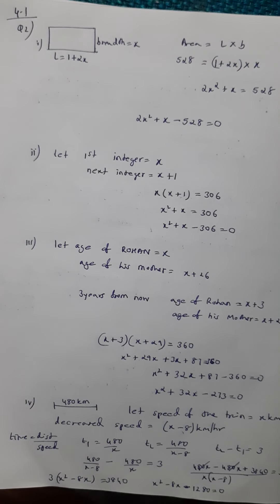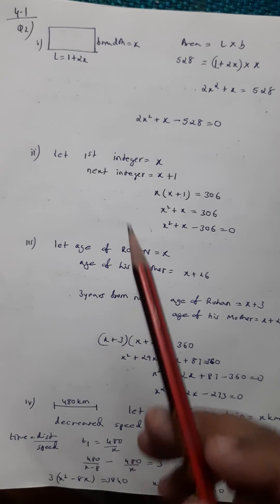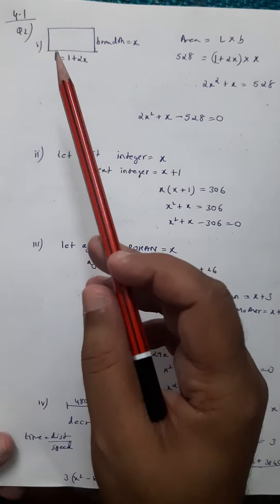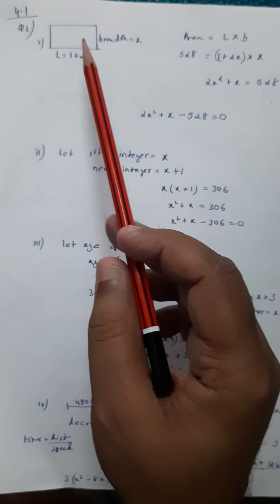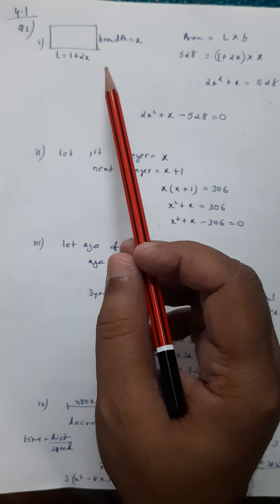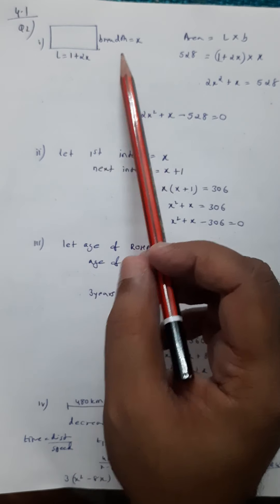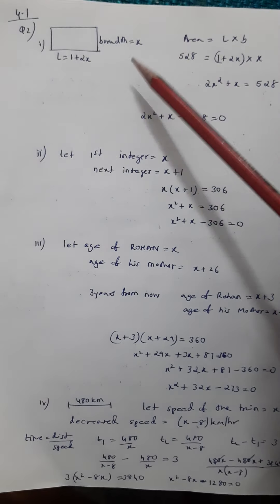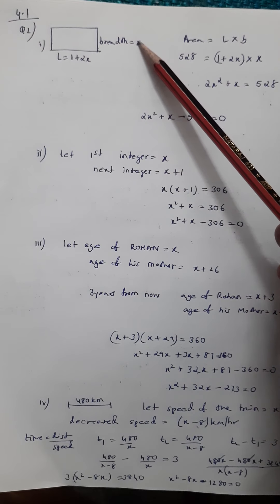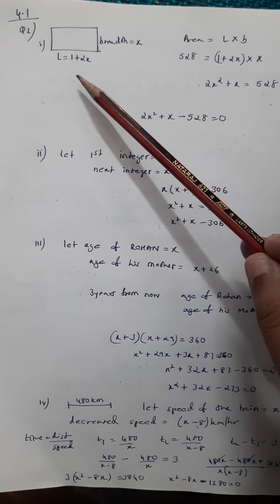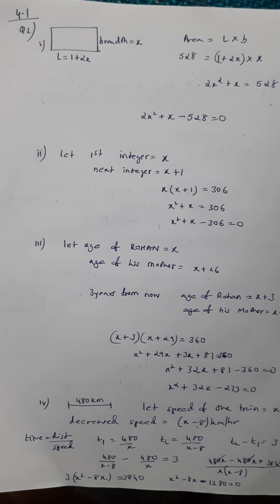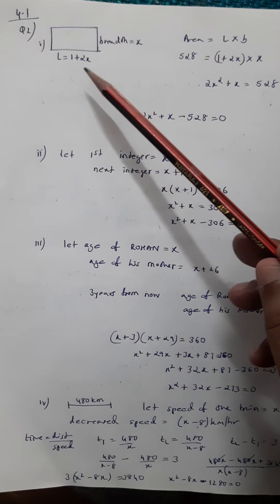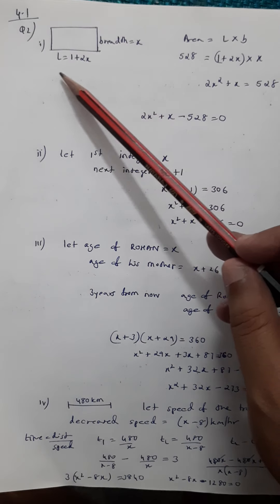Now 4.1 question number 2. Here we are given a rectangle. The breadth of the rectangle, let us assume as x. Now what is the length? The length is given as one more than twice the breadth, so the length becomes one plus two x.